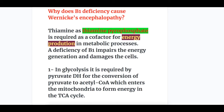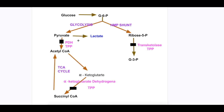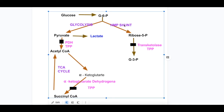Why does vitamin B1 deficiency cause Wernicke's Encephalopathy? Thiamine as thiamine pyrophosphate (TPP) is required as a cofactor for energy production in metabolic processes. A deficiency of vitamin B1 impairs energy generation and damages cells causing cell death. Vitamin B1 is required in the glycolytic pathway for the conversion of pyruvate to acetyl-CoA — the enzyme is pyruvate dehydrogenase, requiring TPP. In the HMP shunt pathway, it is required for the activation of transketolase; a block here causes accumulation of pentose sugars.